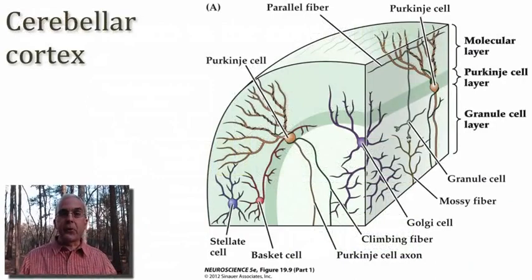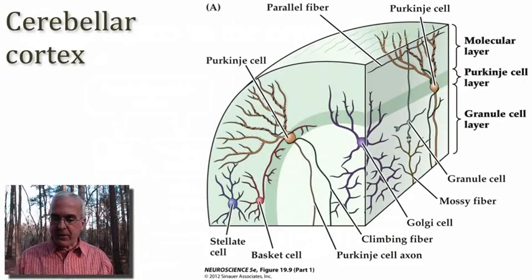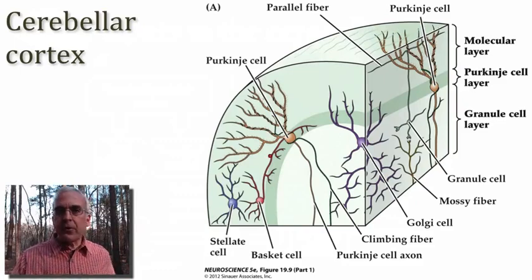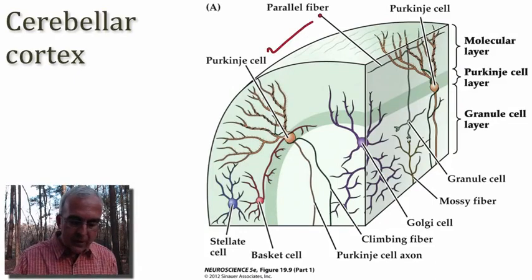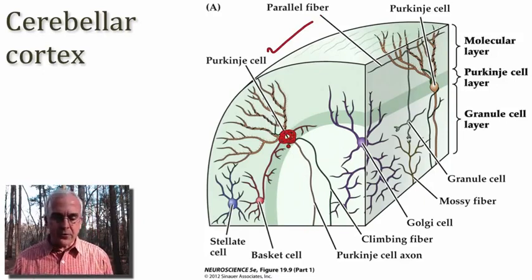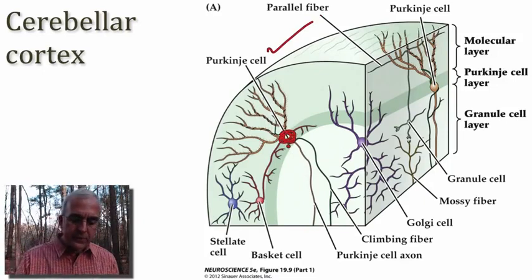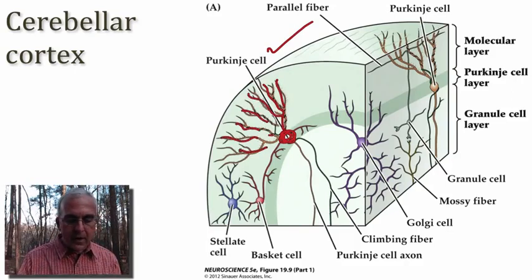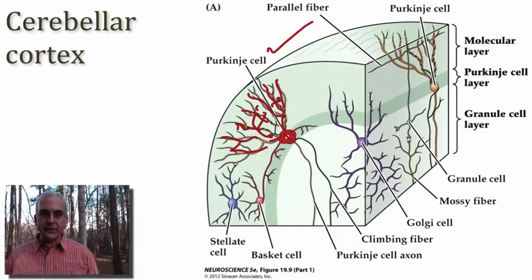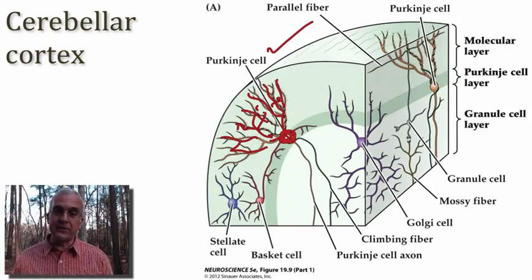Now let's have a deeper look into the cortex of the cerebellum and some of the important neurons that we find there. The principal neuron is a very large neuron called the Purkinje cell, and it's really one of the most beautiful neurons you'll ever want to see under the microscope. It has a very large cell body that gives rise to incredibly complex branching patterns of dendrites, and this illustration cannot do justice to the form and beauty of the Purkinje cell in its dendritic arbor.